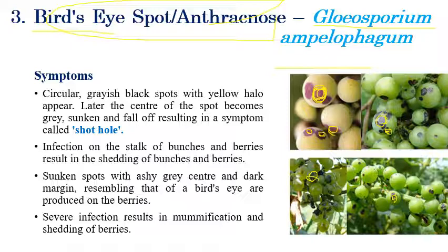This is very important and can definitely be asked in exams. Mummification of fruits can also be seen. If shothole symptom along with mummification is present, it is bud eye spot. If only mummification of fruits is present, it is grape downy mildew. Shothole symptom along with brown discoloration and yellow halo is characteristic of bud eye spot — it looks like a bud eye, hence the name.